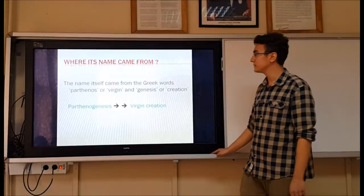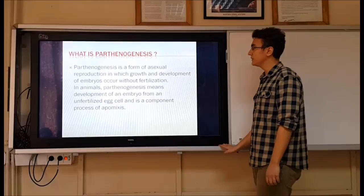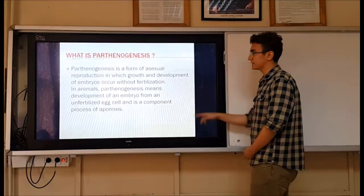Where did its name come from? The name itself came from the Greek words 'parthenos,' meaning virgin, and 'genesis,' meaning creation — so parthenogenesis means 'virgin creation.' Parthenogenesis is a form of asexual reproduction in which growth and development of embryos occur without fertilization. In animals, parthenogenesis means development of an embryo from an unfertilized egg cell.